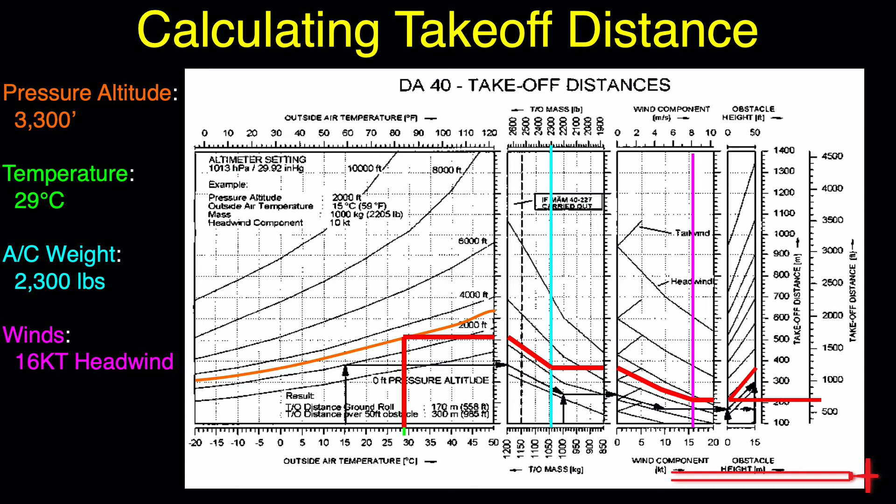Then plot another line following the obstacle height line up to 15 meters, or roughly 50 feet, to read our expected distance to clear a 50-foot obstacle to the right — in this case, about 1200 feet.